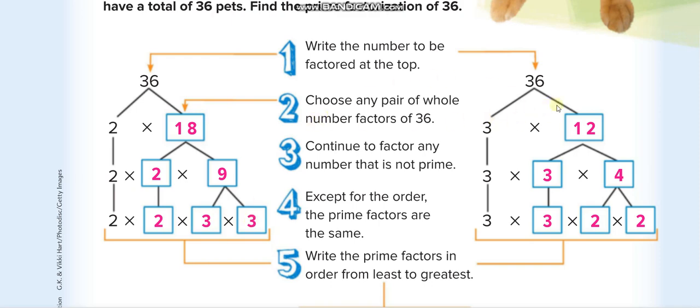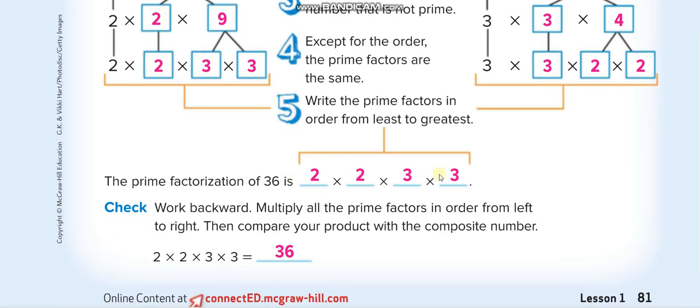Now they tried it in another way, and whatever the way you try, you will get the same answer. See, 3 times 12, that is also 36. You cannot break 3 more, so it's down as it is. Then 12, 3 times 4. This 3 down as it is. Now you break this 4, 2 times 2. So again you get the same numbers: 2, 2, 3, 3. For 36, the prime factorization is 2 times 2 times 3 times 3. When you multiply all these numbers you get 36: 2 times 2 is 4, 4 times 3 is 12, and 12 times 3 is 36.